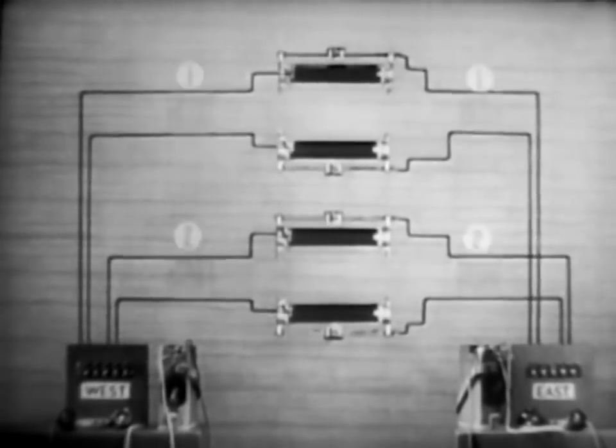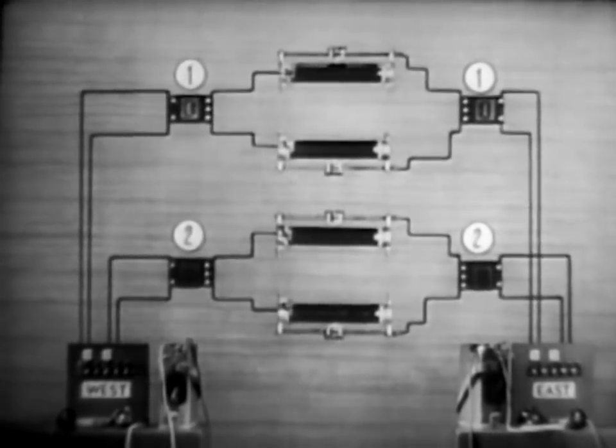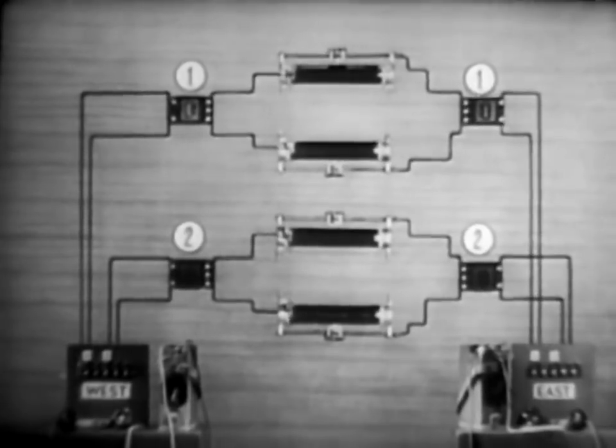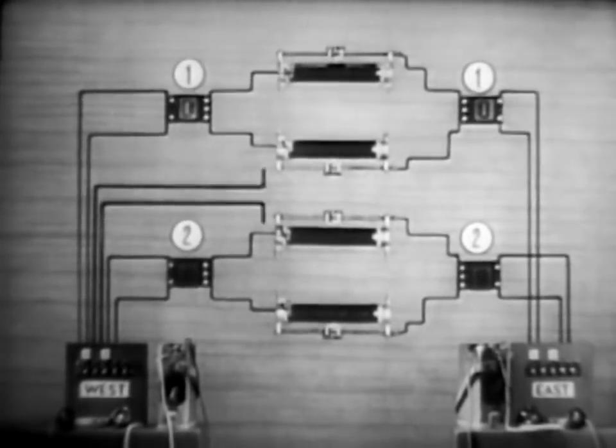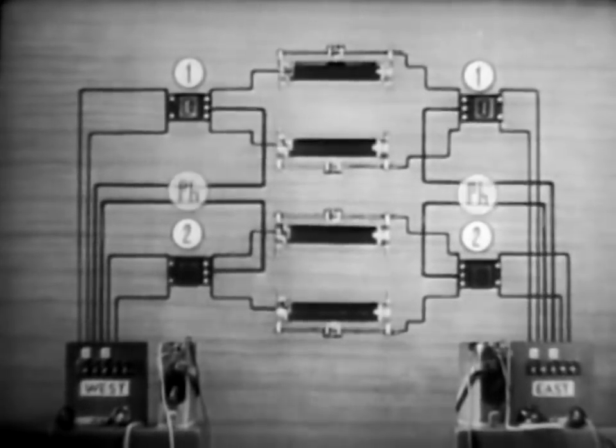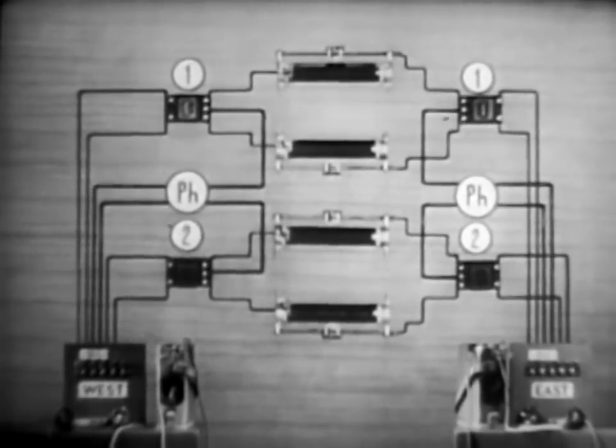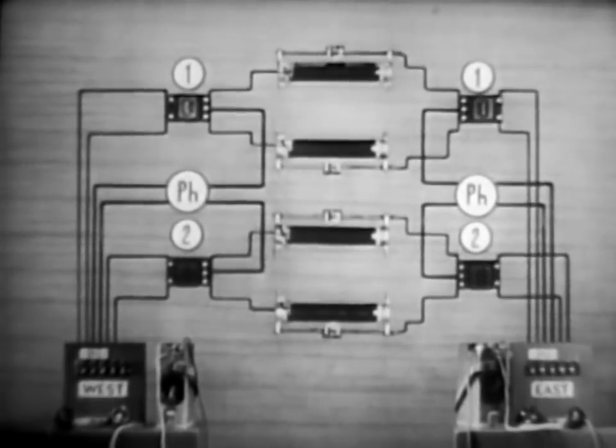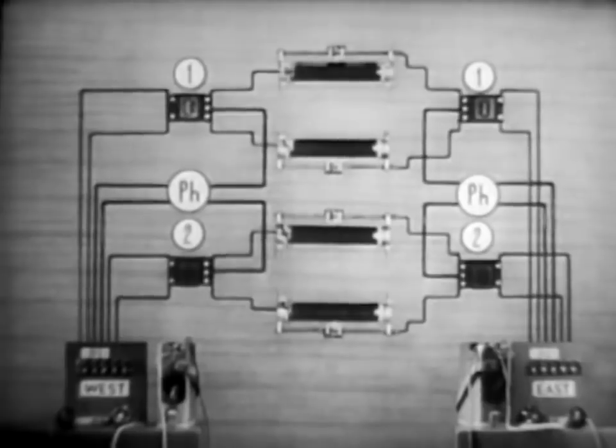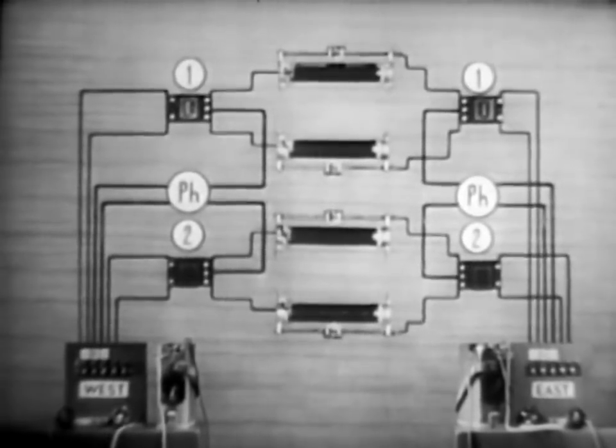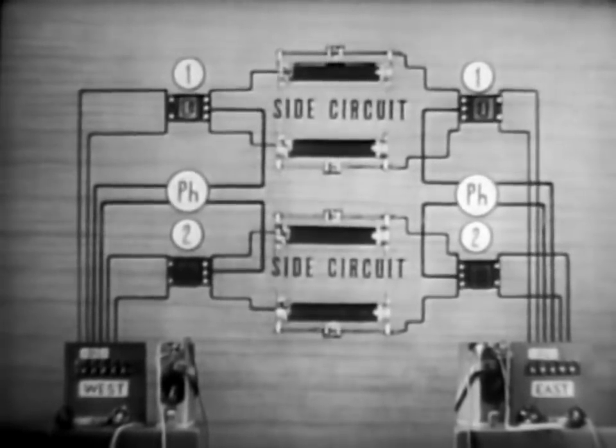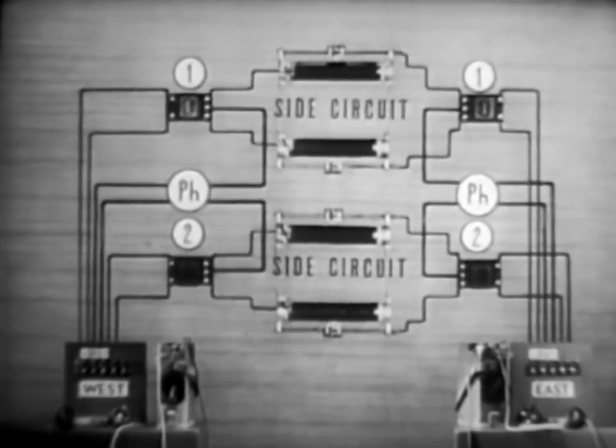The first step is to insert a repeating coil at each end of each line. The phantom may be a telephone or telegraph circuit. We're going to use it for telephone. We now have our phantom circuit. The two original circuits are now known as side circuits. Altogether, the three circuits form a phantom group.